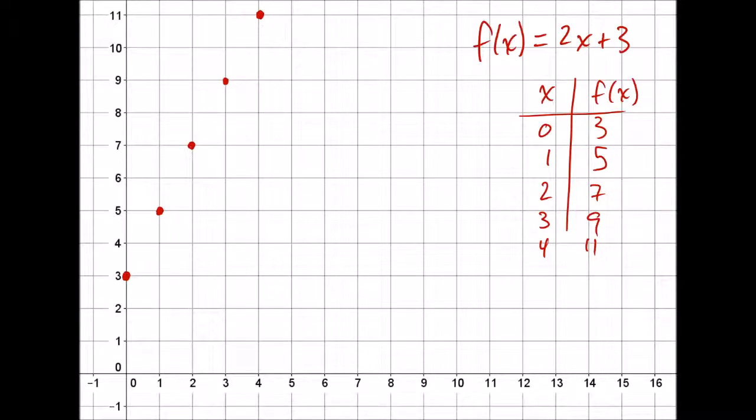Because these points were generated by a function, in fact a linear function, it's not a surprise that they're all lying exactly on the same straight line. I could take a ruler or straight edge and draw the line through these points. The function 2x + 3 we know is a linear function.